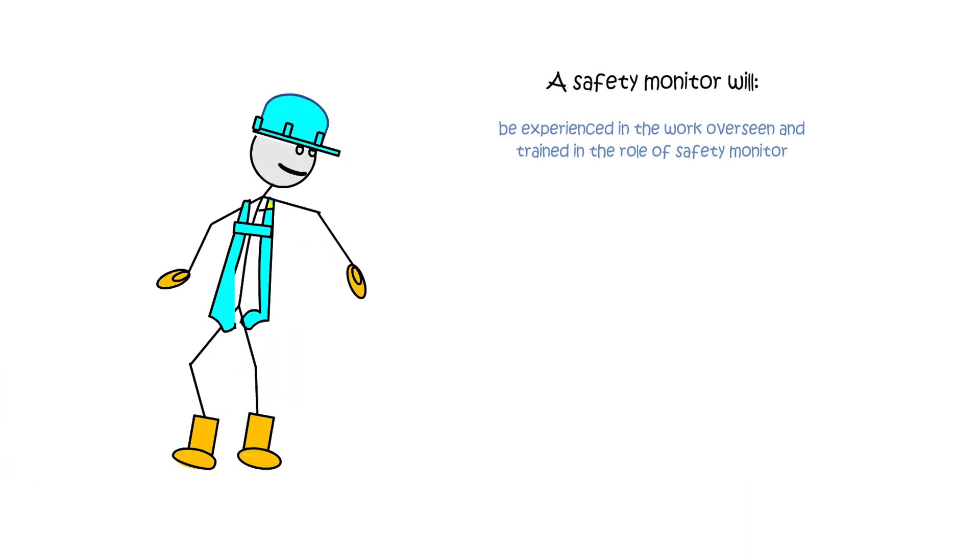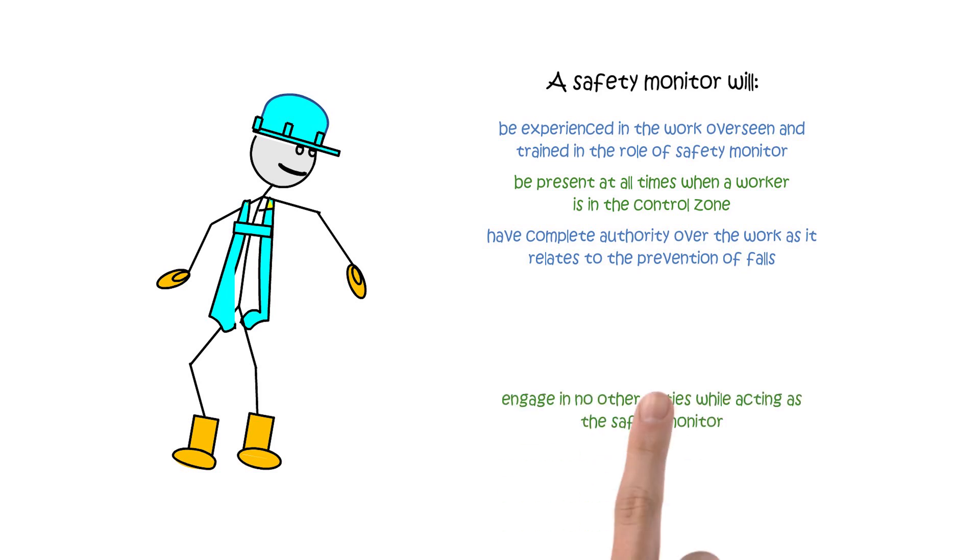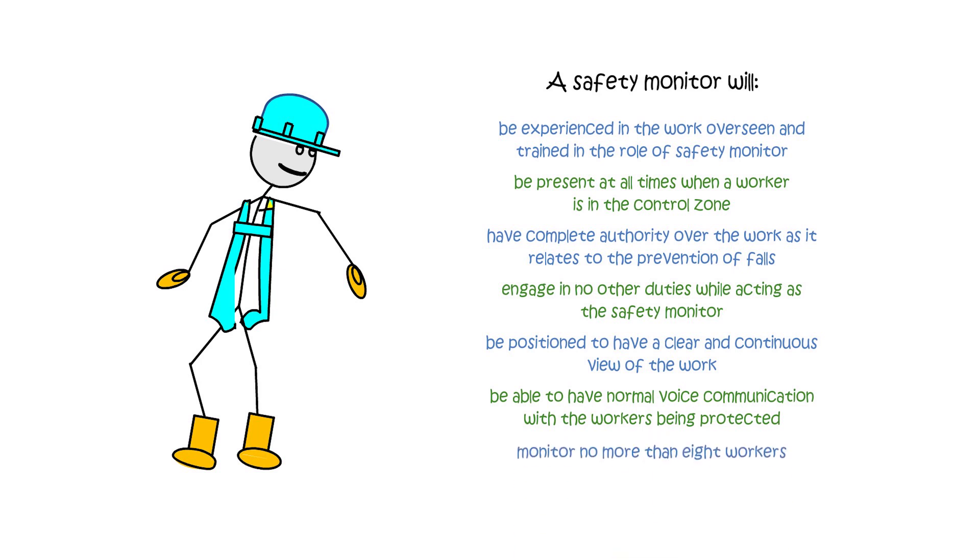A safety monitor will be experienced in the work overseen and trained in the role of safety monitor; be present at all times when a worker is in the control zone; have complete authority over the work as it relates to the prevention of falls; engage in no other duties while acting as the safety monitor; be positioned to have a clear and continuous view of the work; be able to have normal voice communication with the workers being protected; monitor no more than eight workers; and be instantly distinguishable from other workers.